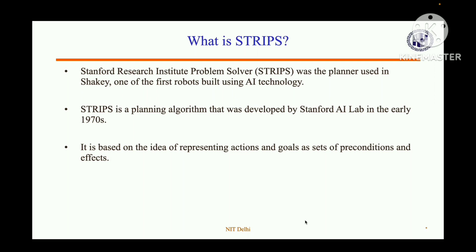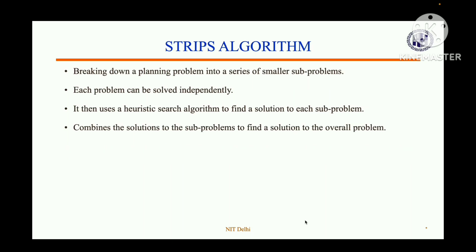STRIPS stands for Stanford Research Institute Problem Solver. It is a problem-solving planner used in Shakey, a robot built using AI technology. It is a planning algorithm developed by Stanford AI lab in the 1970s. The idea behind it is representing actions and goals as a set of preconditions and effects.